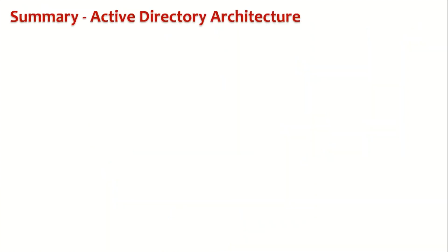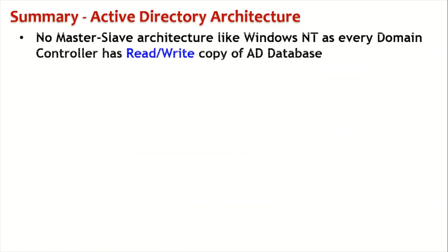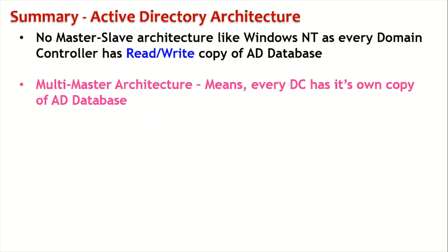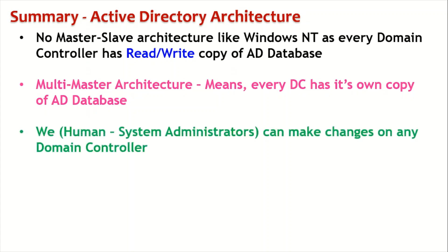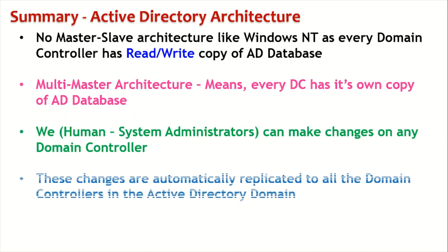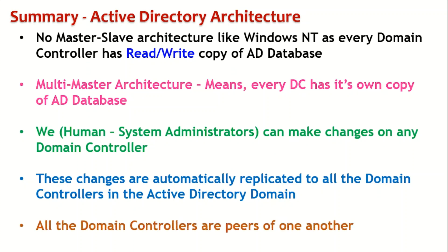To summarize the active directory architecture: there is no master-slave architecture like Windows NT. Every domain controller has a read and write copy of the active directory database. This is called a multi-master architecture. Systems administrators can make changes on any domain controller, and these changes will be automatically replicated to all domain controllers in the active directory domain. That's the reason all domain controllers are peers of one another.